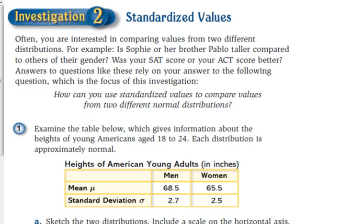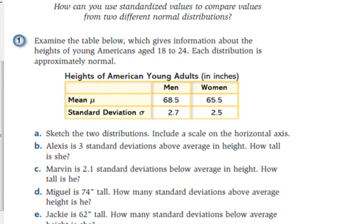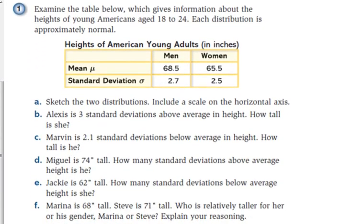We've got another table here. We are talking about heights of American young adults. We've got men and women. They're approximately normal. That is always a key. They have to be approximately normal to be able to do this stuff. But we're given the mean and the standard deviation for each.